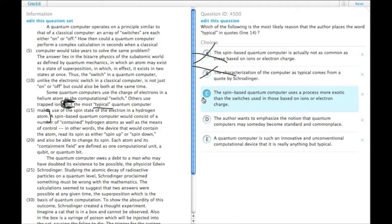C: the spin-based quantum computer uses a process more exotic than the switches used in those based on ions or electron charge. We don't find anything about the nature of these switches, so that doesn't seem possible.